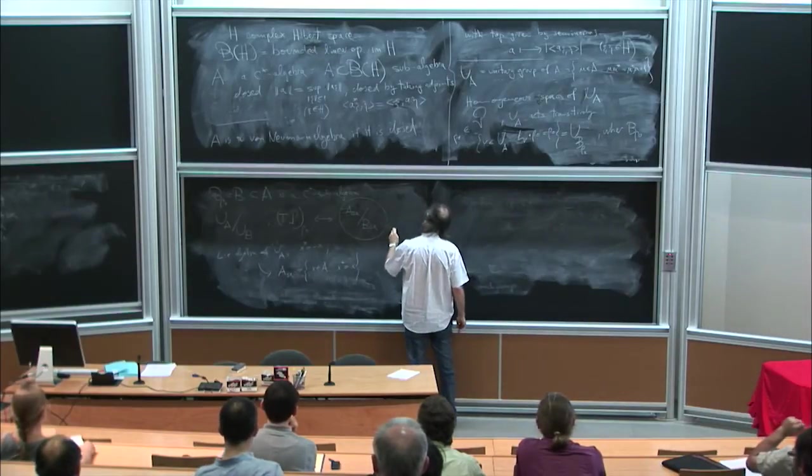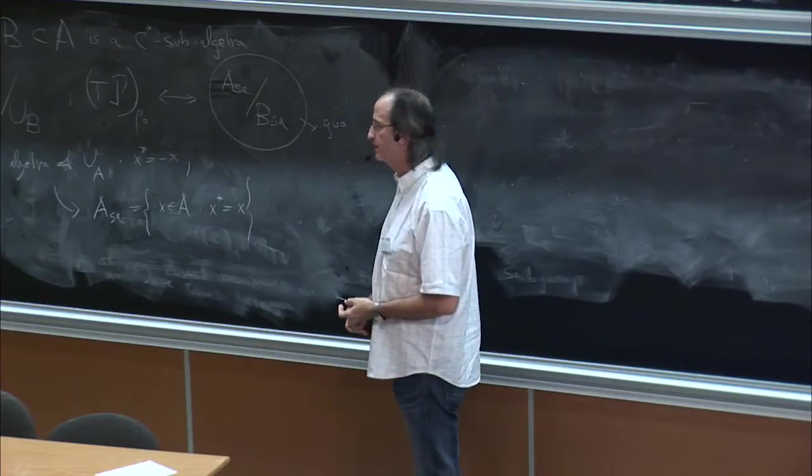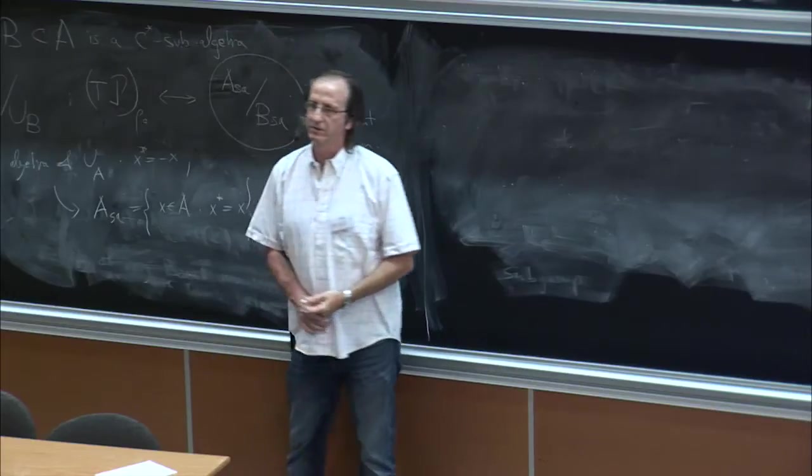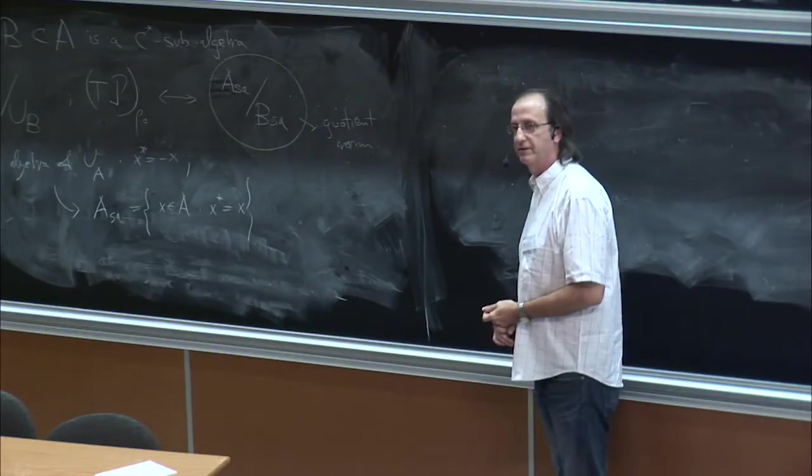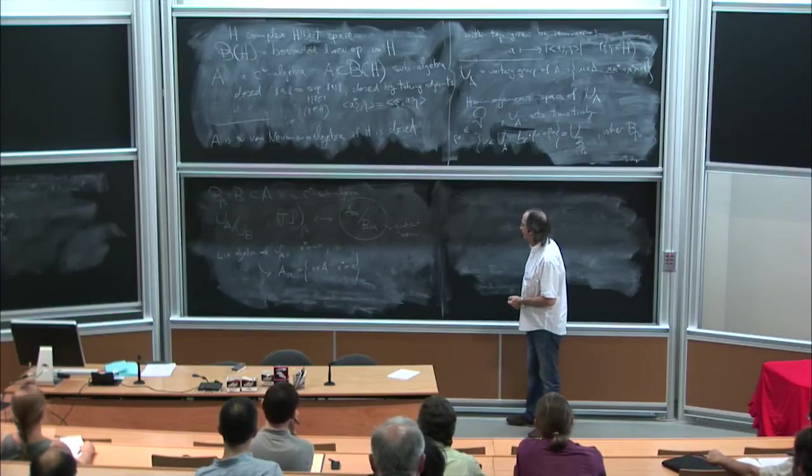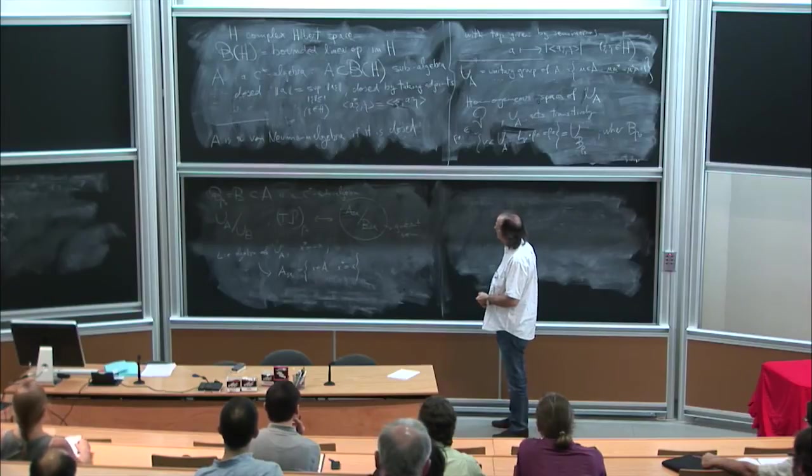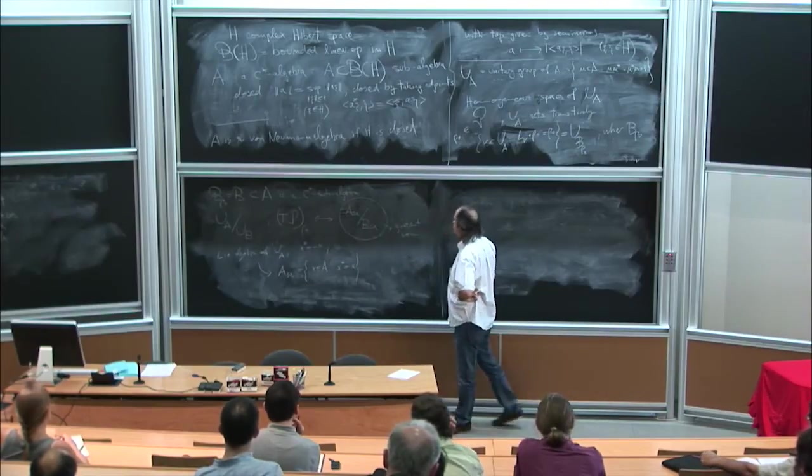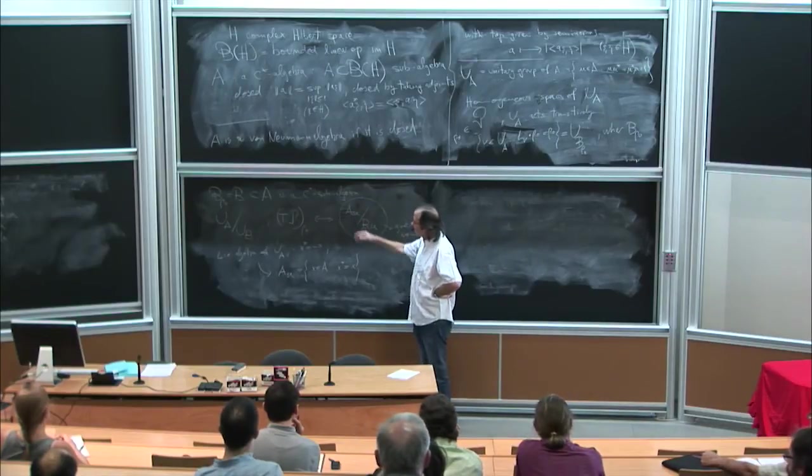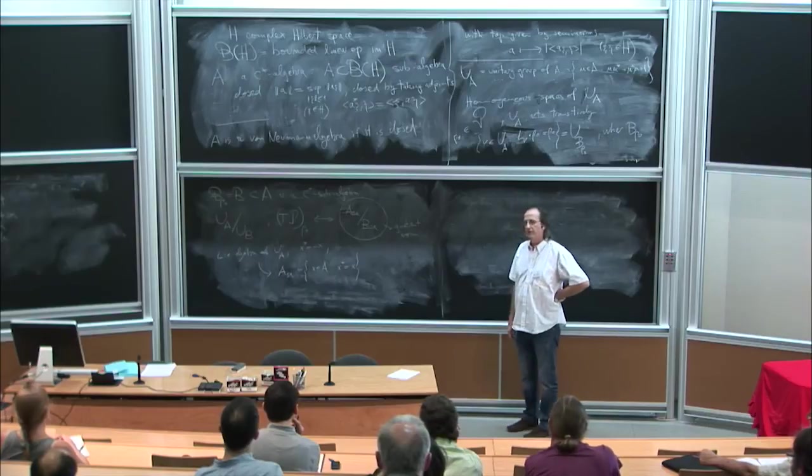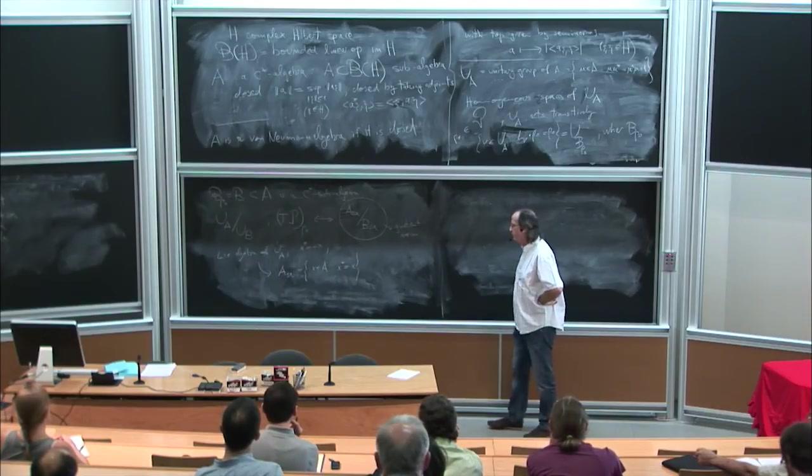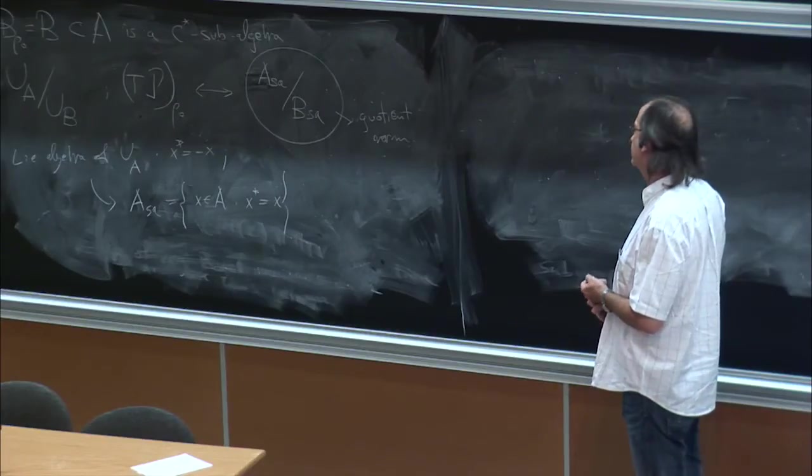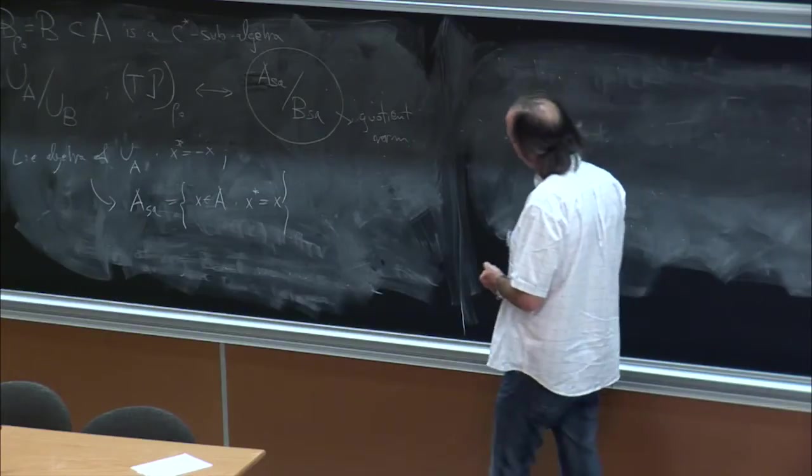So we'll use here the quotient norm. This is a quotient of real Banach spaces, so we'll use the quotient norm. And this will endow the homogeneous space P with an invariant, a group invariant, a left invariant metric. So one problem with the operator norm in any C-star algebra is that in general it is non-smooth. I mean, if you take the norm of a smooth field, that won't be a smooth map, just a continuous map. So these are non-smooth metrics.